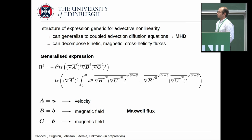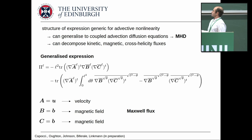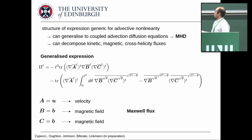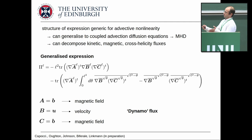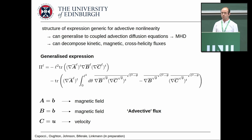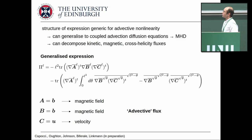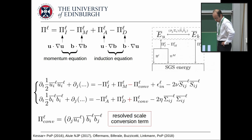For MHD we have different terms in the momentum and induction equations. The Maxwell fluxes come from the Lorentz force, taking the two fields as magnetic field with a velocity gradient tensor in front. Going to the induction equation yields what I call the dynamo flux — not necessarily related to field-line stretching but originating from the term B·∇u — and we can do the same for advection of magnetic field lines by the flow. The latter two have the same physical origin, coming from the electric field, so they should be discussed together.